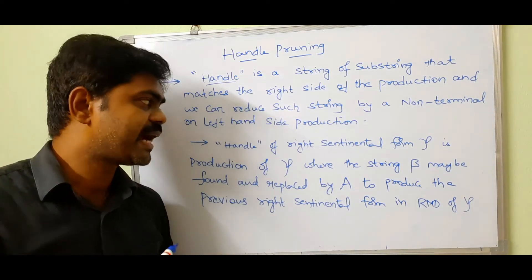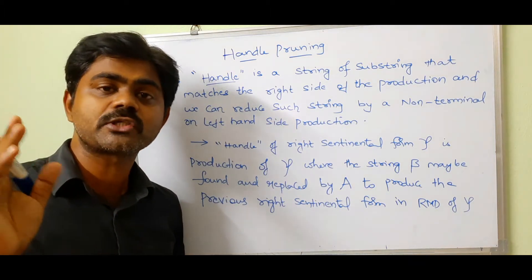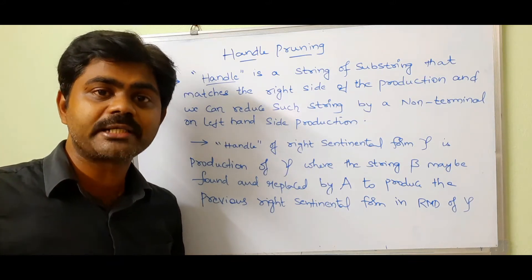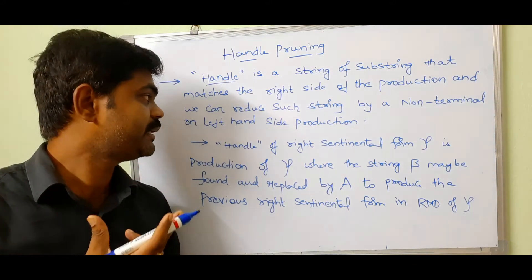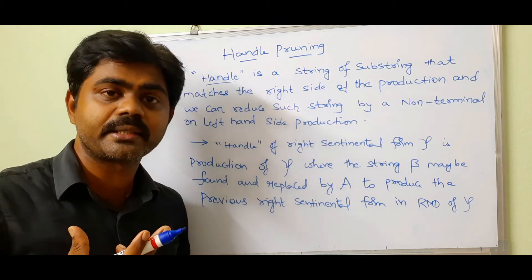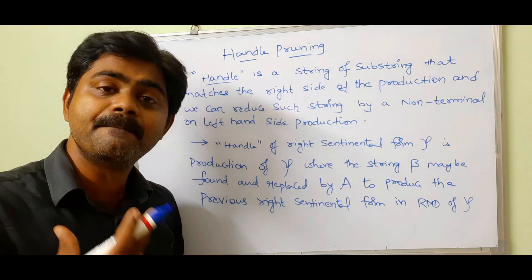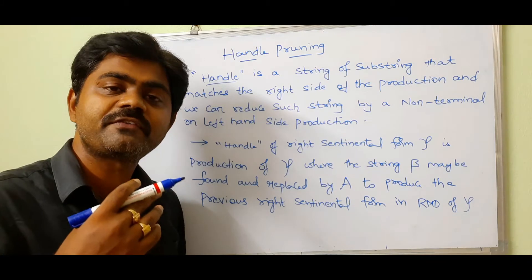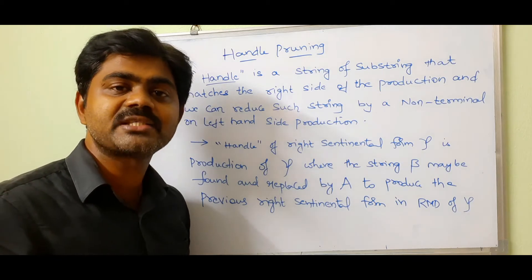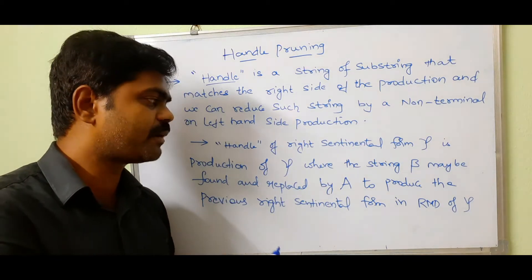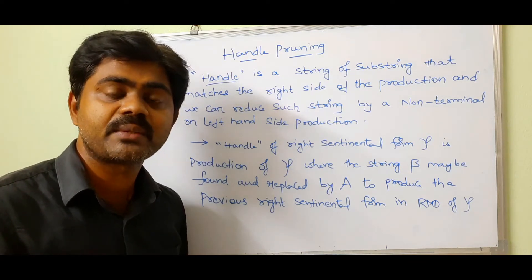There is one more definition here: the handle of a right sentential form. Here we're talking about rightmost derivation, because we need to focus on the right-hand side of the production and then substitute the non-terminal to reduce that substring by a non-terminal on the left-hand side production. So the handle of right sentential form gamma is the production A → β when the string β may be found and replaced by A, producing the previous right sentential form in the rightmost derivation of gamma.